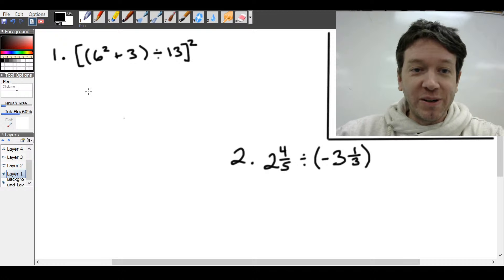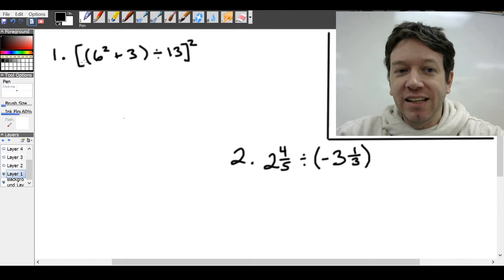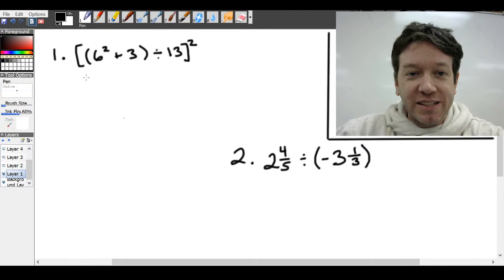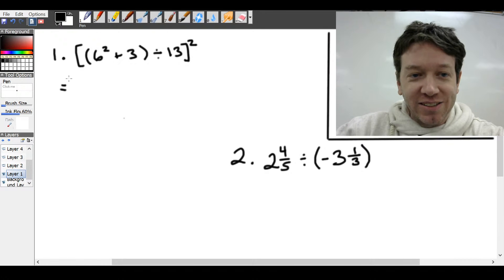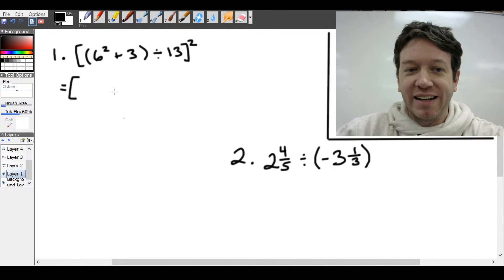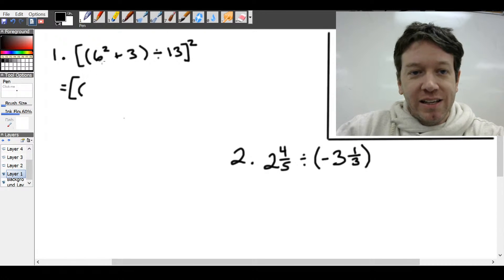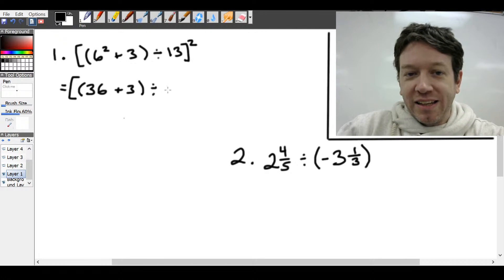So first, we're going to start with a subbed mass. So here's question one. In this question, we want to follow the rules for BEDMAS. So we're going to deal with the bracket first. And inside that bracket, we have another bracket. So let's deal with that. We'll leave the square bracket as it is.